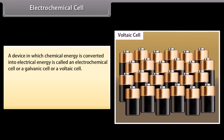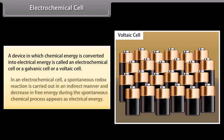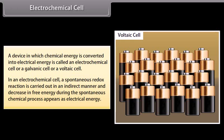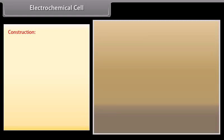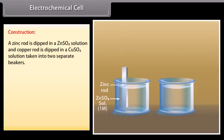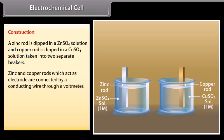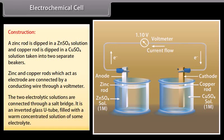Electrochemical cell: A device in which chemical energy is converted into electrical energy is called an electrochemical cell, or a galvanic cell, or a voltaic cell. In an electrochemical cell, a spontaneous redox reaction is carried out in an indirect manner, and decrease in free energy during the spontaneous chemical process appears as electrical energy. Construction: A zinc rod is dipped in a ZnSO4 solution and a copper rod is dipped in a CuSO4 solution, taken into two separate beakers. Zinc and copper rods, which act as electrodes, are connected by a conducting wire through a voltmeter. The two electrolyte solutions are connected through a salt bridge — an inverted glass U-tube filled with a warm concentrated solution of some electrolyte.